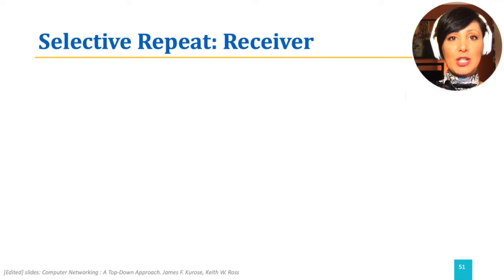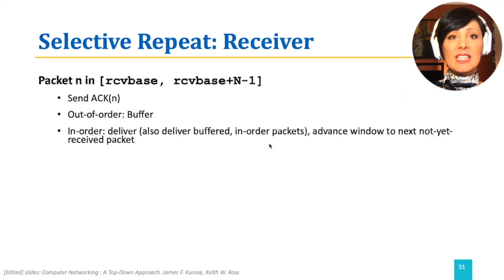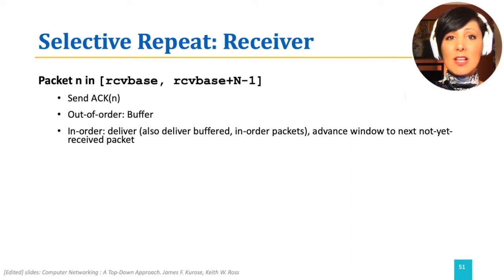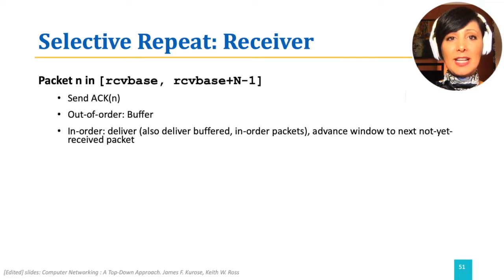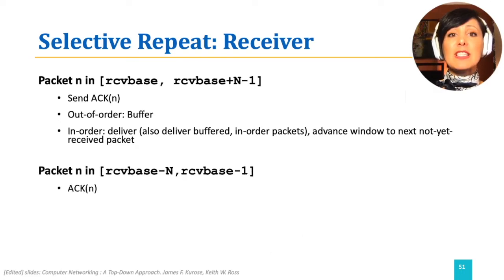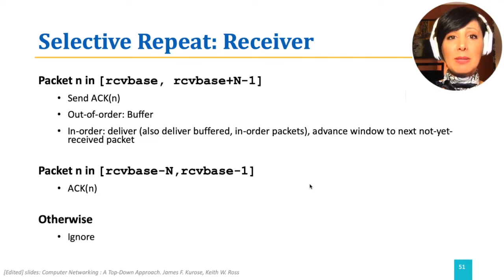At the receiver side, if a packet received is within the window range, an acknowledgment for that packet only is sent. If the packet is within the window range but out of order — meaning there are other packets expected between this packet's sequence number and the base of the receiver window — the packet will be buffered. If the packet is in order, it will be delivered to the upper layer, advancing the receiver window base. If the packet is outside the window range and was previously acknowledged, it will be re-acknowledged; otherwise it will be completely ignored.